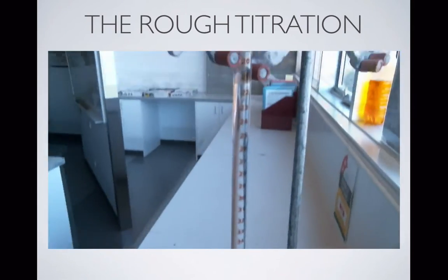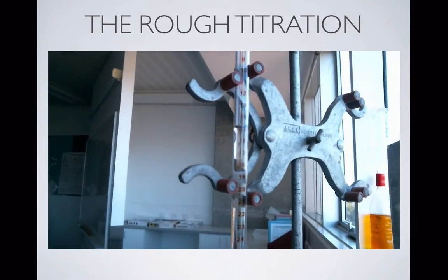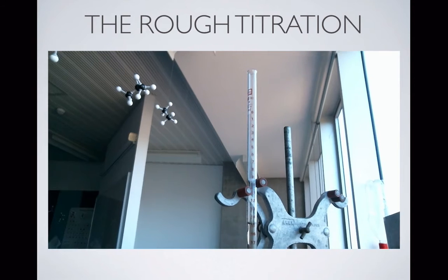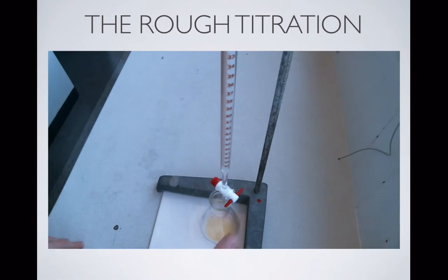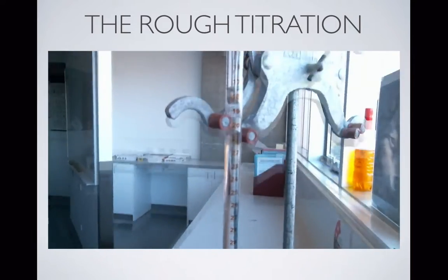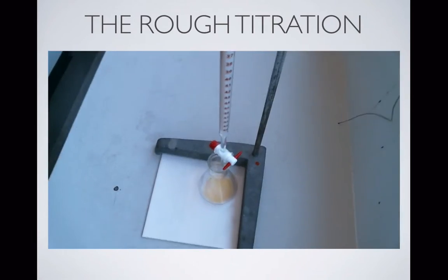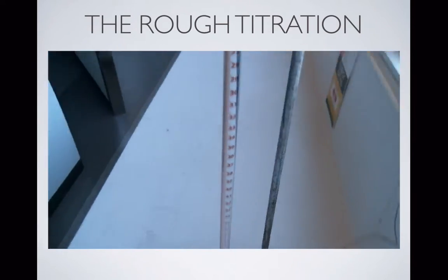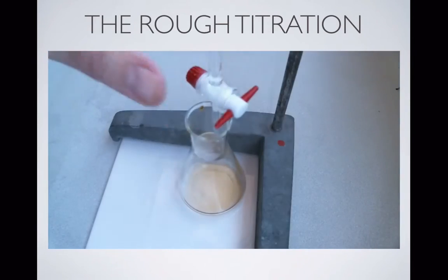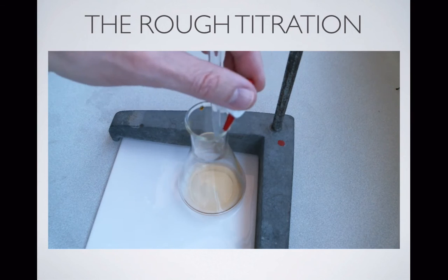Now we obviously want to check what our initial reading is, and we also want to make sure that our funnel isn't in the top of the burette. So now we're going to start adding the liquid about a mil or two at a time. We're not trying to be very accurate. We're not trying to hit the end point exactly. We're just trying to get a rough idea of how much liquid is needed to get the reaction finished.